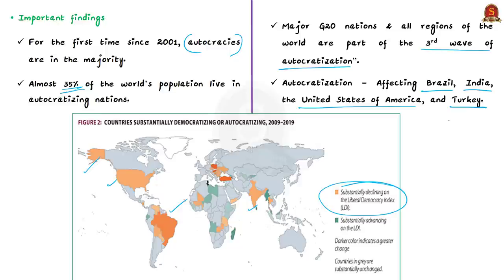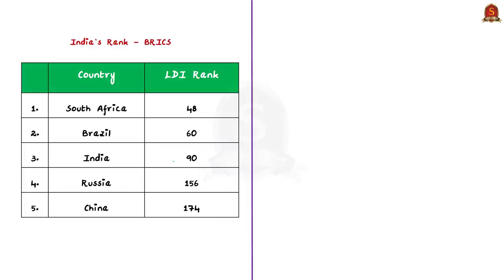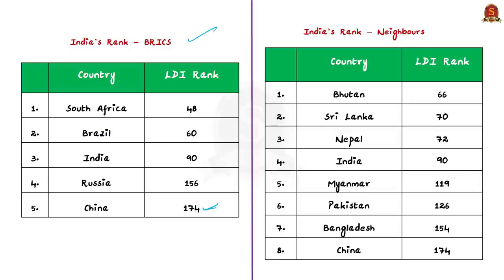These are major economies with sizable populations and substantial global military, economic, and political influence. Among the BRICS countries, the higher the ranking, the lower the LDI score. China has the worst LDI score, ranked at 174th position, while comparatively South Africa has done well. With respect to India's neighbors, the report notes that Sri Lanka is one of the four countries that has achieved the greatest democratic gains.